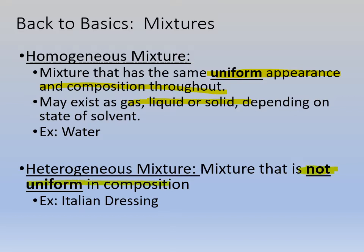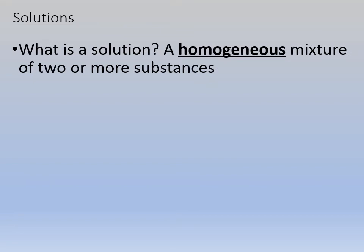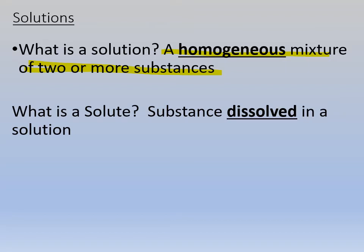A heterogeneous mixture is not uniform in composition — you can tell there are different parts to it. Example: Italian dressing. You can tell there are tomatoes, little onion pieces, whatever makes it up. A solution is a homogeneous mixture of two or more substances. So all of our solutions are homogeneous, not heterogeneous. They all look like there's just one thing in it, but they're not. And a solution has two parts.